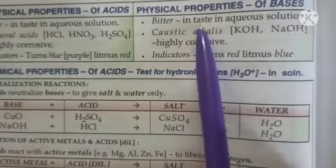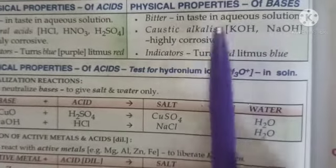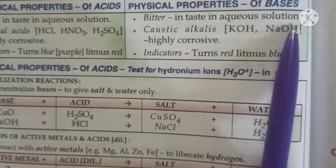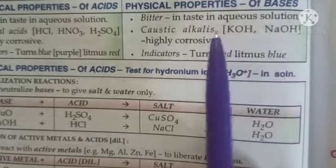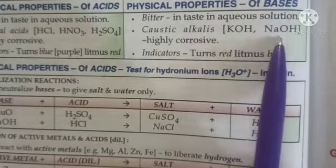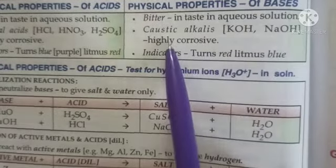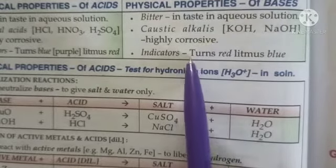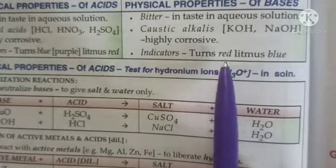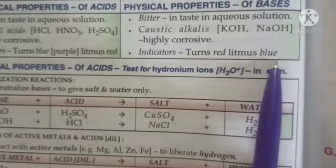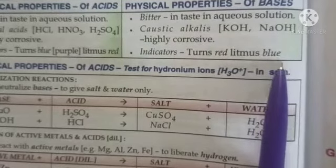The physical properties of bases: bases are always bitter in taste in aqueous solution. Caustic alkalis like potassium hydroxide and sodium hydroxide are highly corrosive in nature. Bases always turn red litmus paper to blue. Thank you, children.